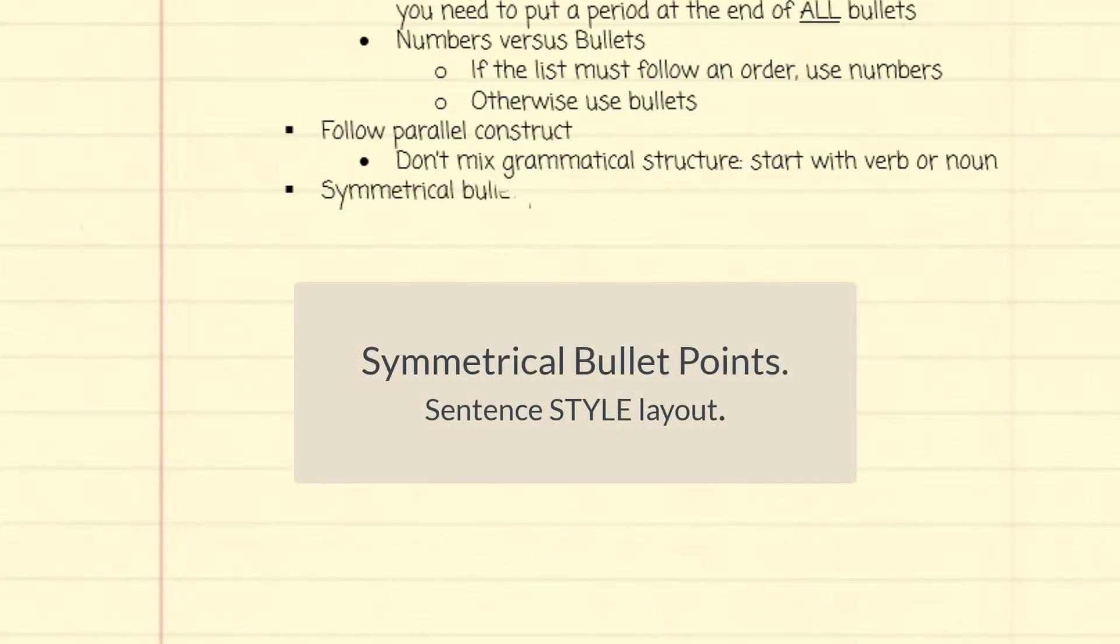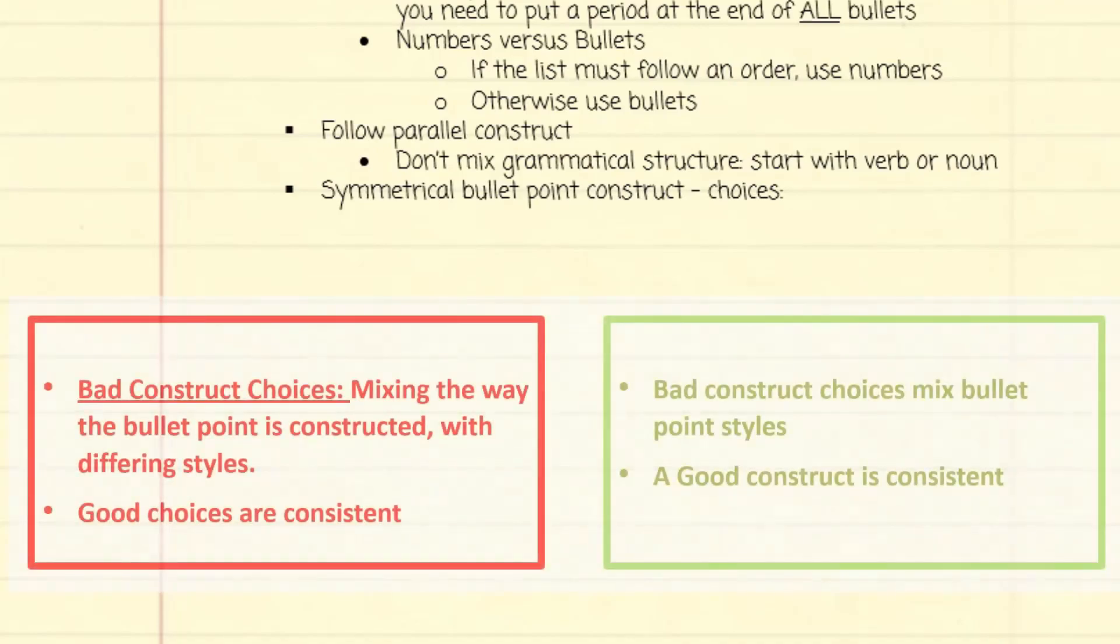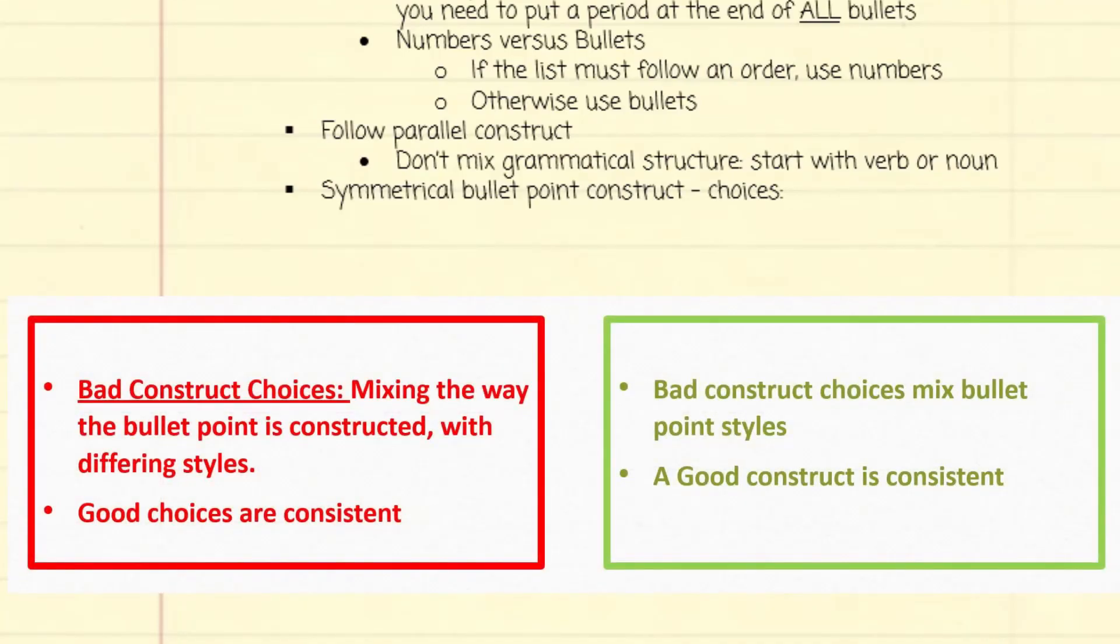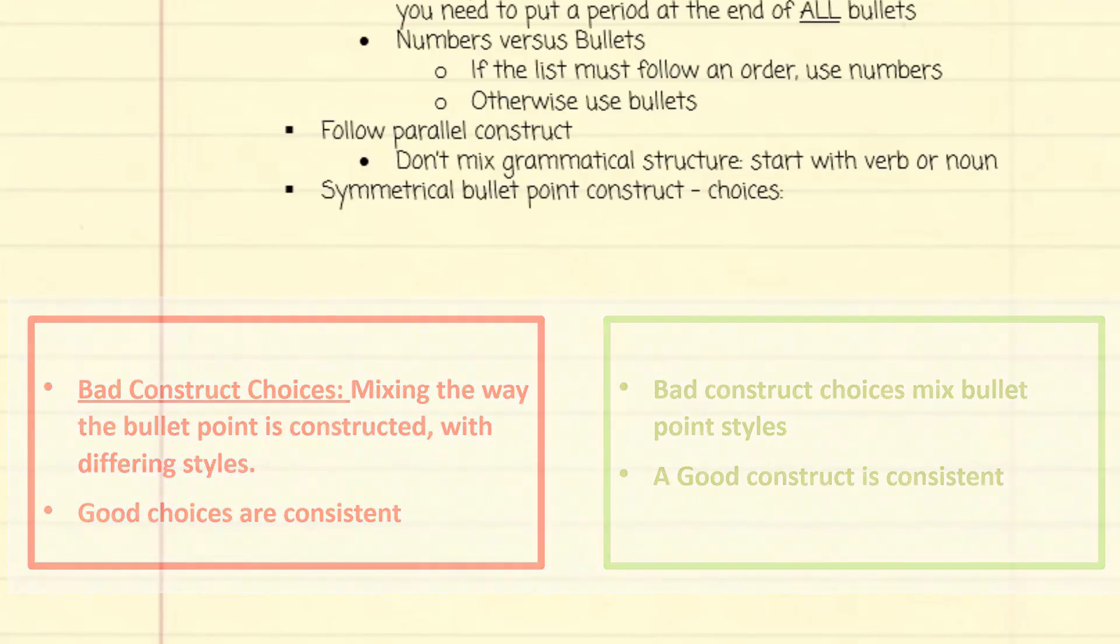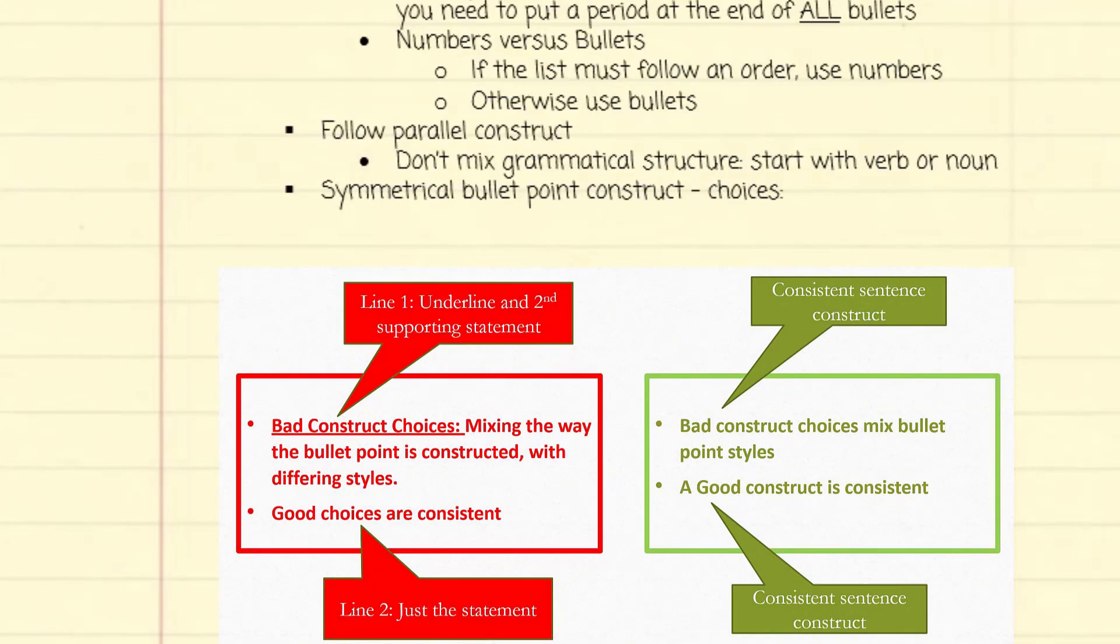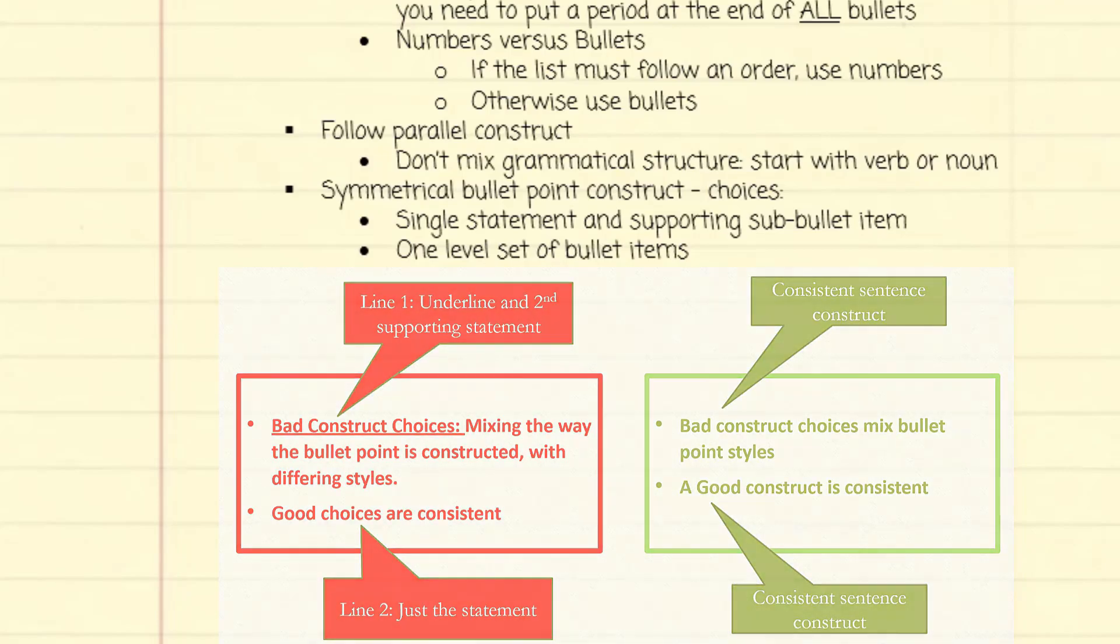Next is symmetrical bullet points. Look at this example. By themselves, neither bullet is wrong, but when combined together, you see the first one has an introductory statement, a colon, and then some additional info. The second one is just a statement. On each slide, keep the style the same one way or the other.